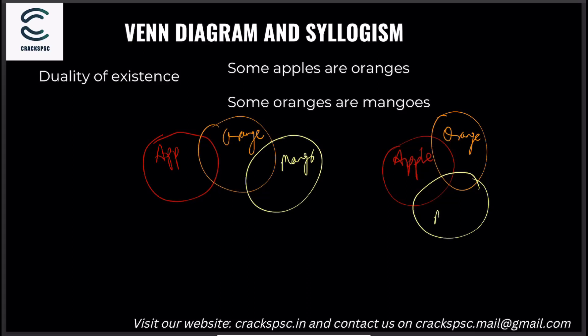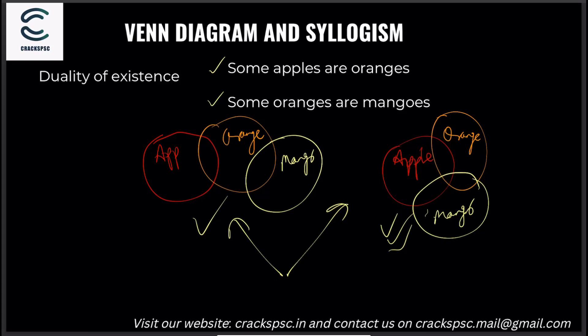If you say no, you're wrong — because the diagram could be arranged so that apple, orange, and mango all overlap, or they may not overlap at all. We are not sure. When you are not sure, you can say 'yes, it can be.' All variations are possible. So when asked 'can some apples be mangoes?' the answer is yes, it's a possible situation. There are two possible arrangements to consider here.